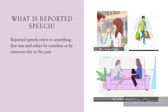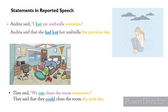What is reported speech? Reported speech refers to something that was said either by ourselves or by someone else in the past. Look at the pictures and examples here. You can see a boy and a girl having a conversation. The boy's name is Brian. He says, 'I am going shopping.' When Ann reports what Brian said to another person, she says: Brian said that he was going shopping.